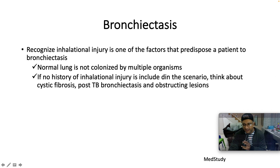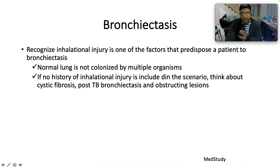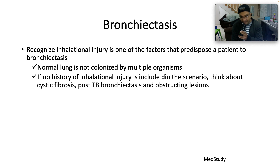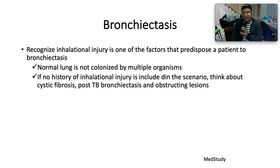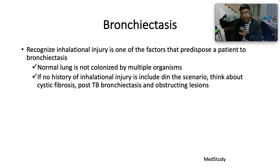So what about bronchiectasis? We need to recognize that inhalational injury is one of the factors that predisposes a patient to bronchiectasis. Normal lung is not colonized by multiple organisms, but when a patient has bronchiectasis, their lung becomes a culturing pot for a variety of different organisms. If no history of inhalational injury is included in the scenario, think about cystic fibrosis, and very importantly post-TB bronchiectasis in our clinical setting here in sub-Saharan Africa where TB is endemic, and obstructive lesions.